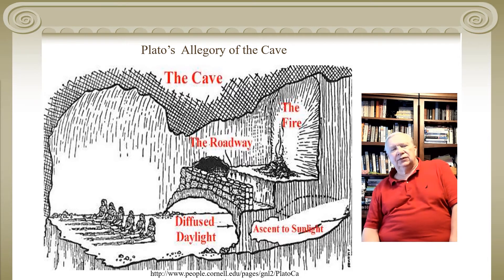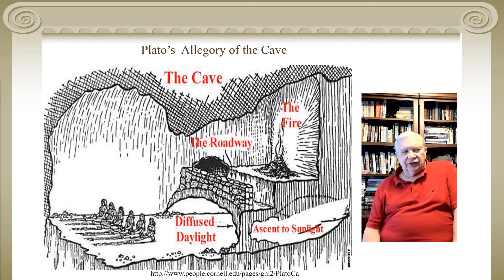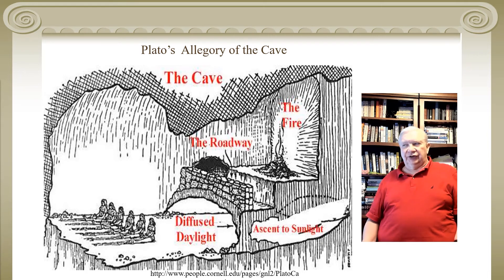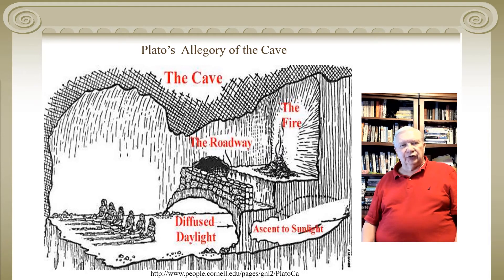Taking that analogy, what Plato is saying is that philosophers are able to grasp the abstract world somewhat — the escapee is a philosopher learning the truth who tries to take it back to fellow prisoners. The forms would be the reality outside of the cave, and the empirical world is what people shackled inside the cave are seeing on an everyday basis.